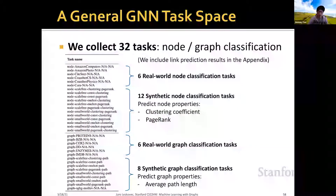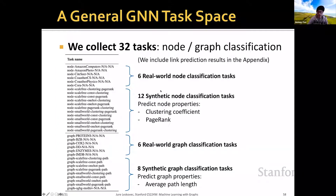Concretely, we collect 32 tasks, which are node and graph classification tasks: six real-world node classification tasks, 12 synthetic node classification tasks including predicting clustering coefficient and page rank, six real-world graph classification tasks, and eight synthetic graph classification tasks including predicting graph average path length.